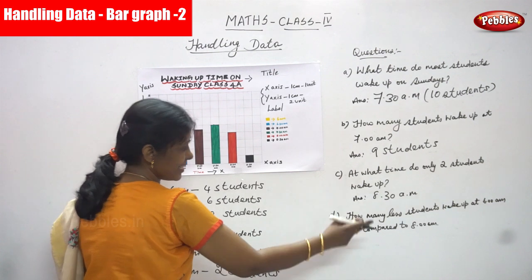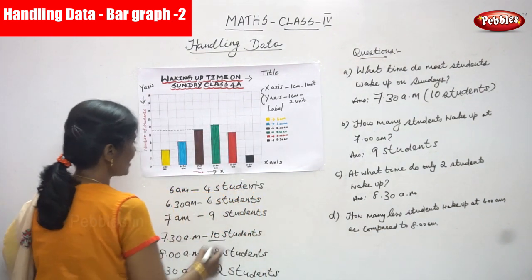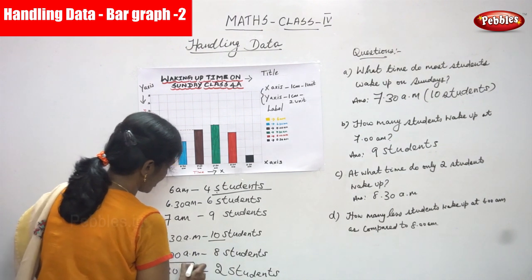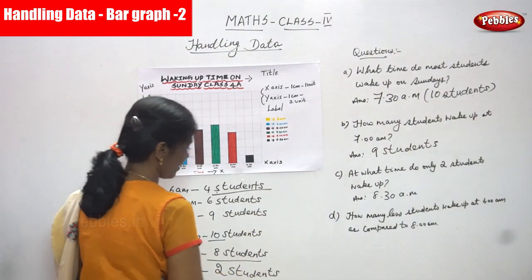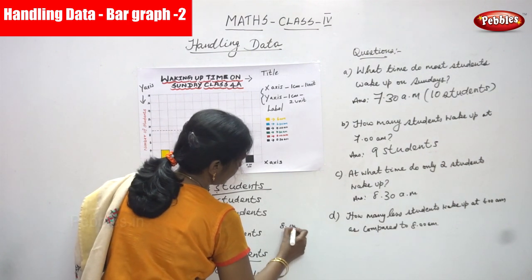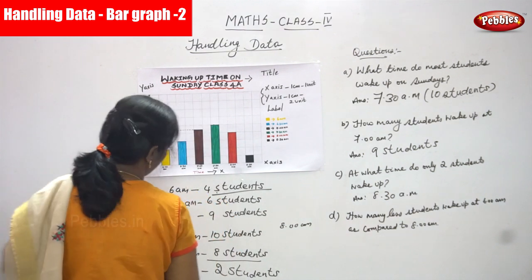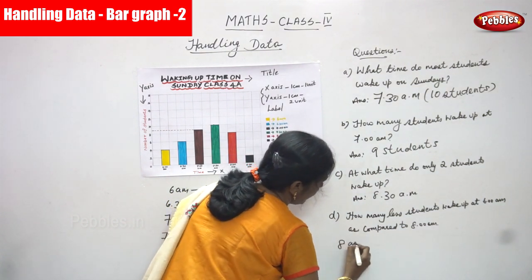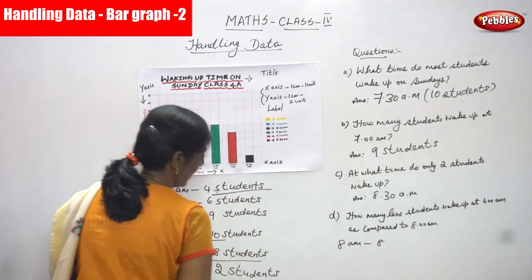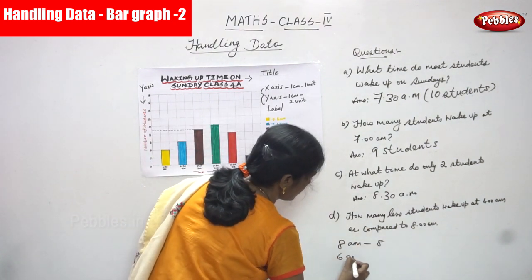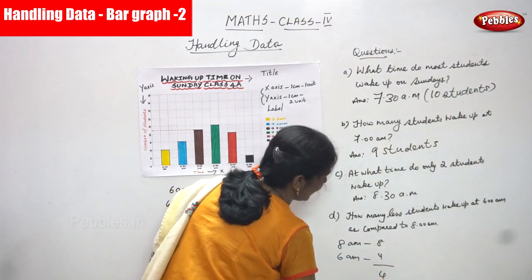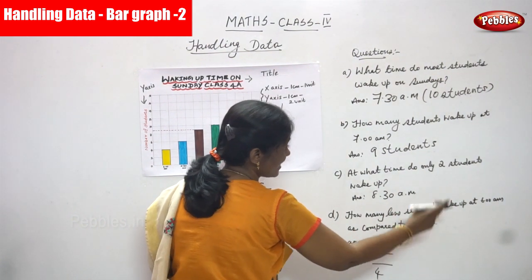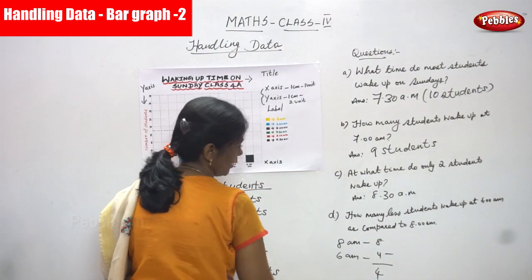And how many less students wake up at 6 a.m. as compared to 8 a.m.? So 6 a.m. — how many students? That is 4 students. And 8 a.m. — how many students? 8 students. So how many less students? You have to subtract. 8 a.m. means 8 students, and 6 a.m. means 4 students. So you subtract: the answer is 4. That is how many less students wake up at 6 a.m. as compared to 8 a.m. — that is 4 students.